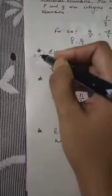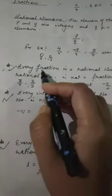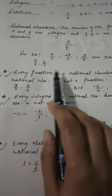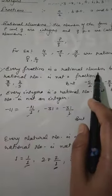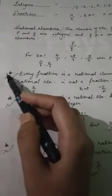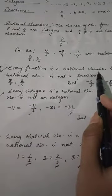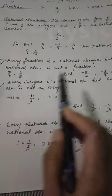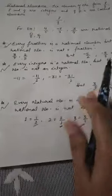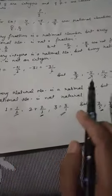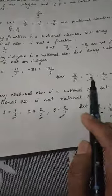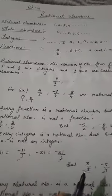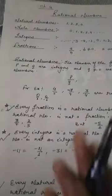These three points are very important. The first point tells the difference between fractions and rational numbers. The second tells the difference between integers and rational numbers. The third tells the difference between natural numbers and rational numbers. These are very important properties.